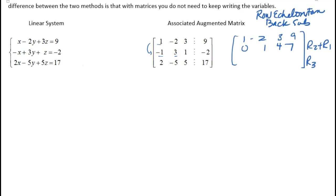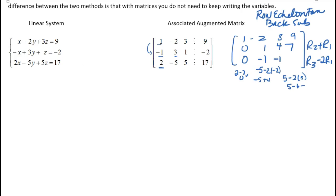Now I need to get a zero in the bottom row. I'll take row three and multiply row one by negative 2. So 2 minus 2 gives zero. Then negative 5 minus 2 times 2 is negative 5 plus 4, giving negative 1. Then 5 minus 2 times 3 is 5 minus 6, giving negative 1. And 17 minus 2 times 9 is 17 minus 18, giving negative 1.